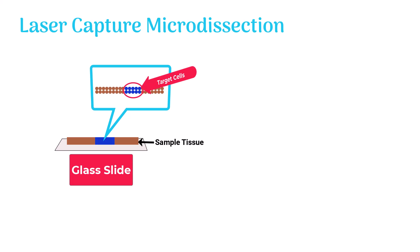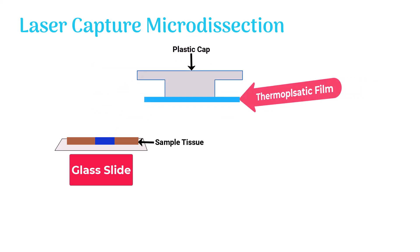These dyes color up the target cells so they are easily identified under the microscope. Now a thermoplastic film is used to extract the cells of interest from the tissue. The thermoplastic film has adherence property, but initially it is inactive.